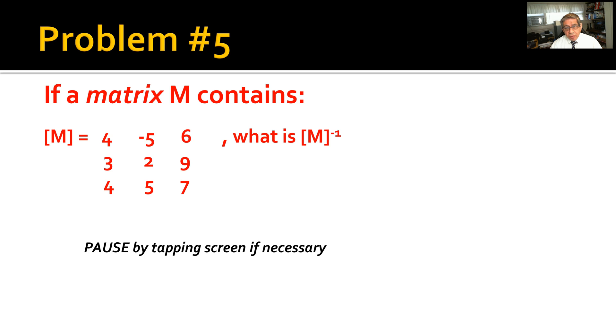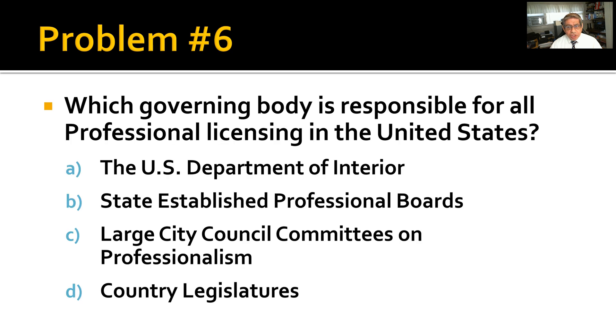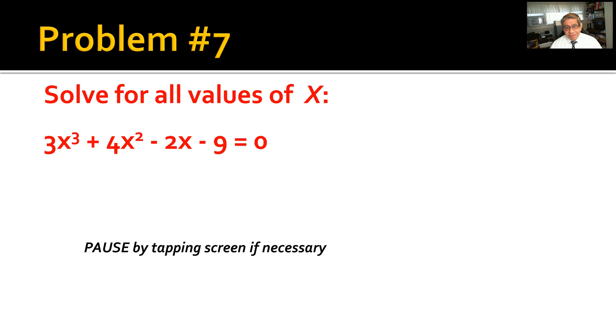Problem number five: If a matrix M contains the following nine values in a 3×3 matrix, what is M⁻¹, which is the inverse of that matrix?